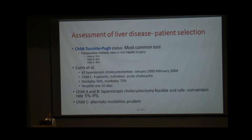It is important to remember that Child B itself is a very heterogeneous group. Most studies when they refer to Child B actually include early Child B and do not include Child B9 patients.